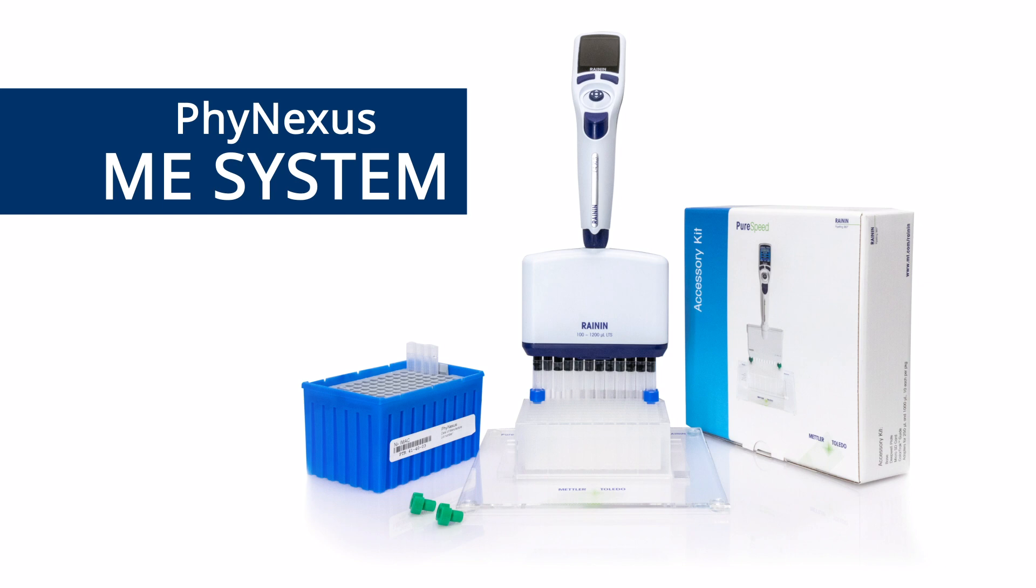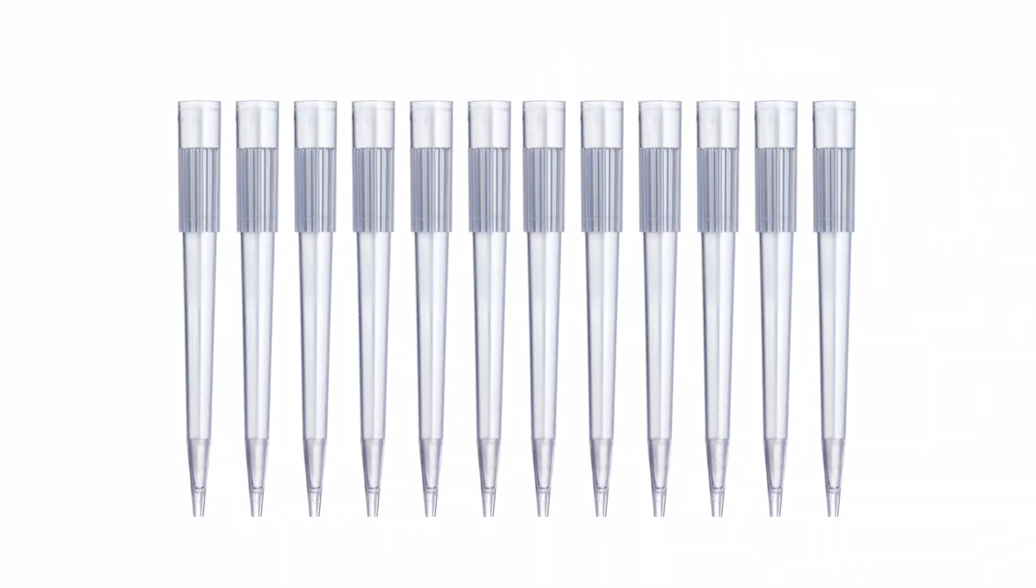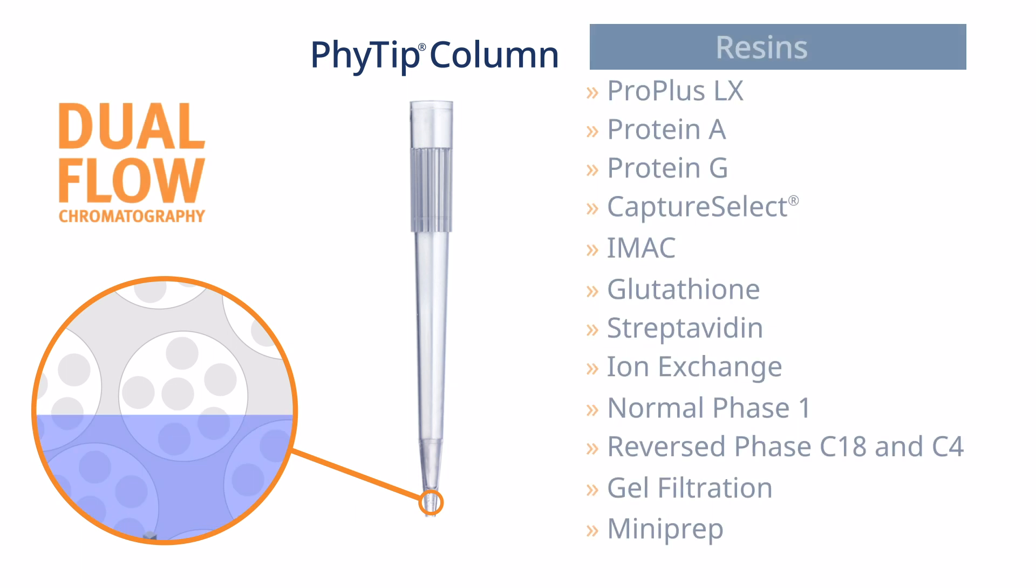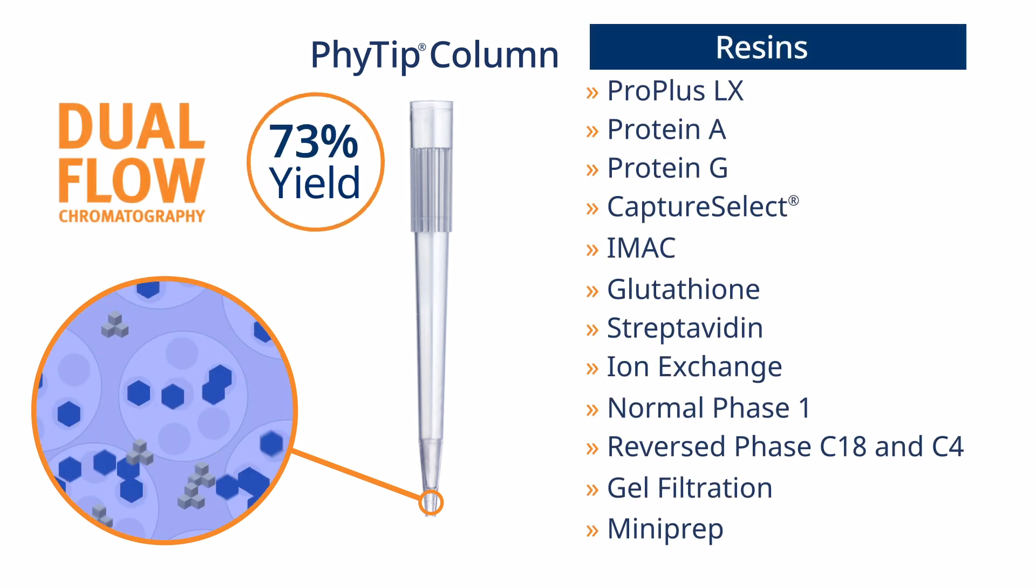The FineXSME system lets you easily automate your small-scale protein purification with Phytip columns for up to 12 samples in parallel. Using our patented dual flow chromatography, the Phytip columns achieve up to 95% yields and generate highly concentrated purified proteins.